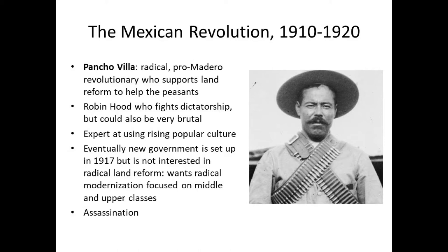This was brilliant by Pancho Villa because it familiarized Americans with him and presented him as someone fighting for liberty and freedom against dictatorship, leading many Americans to support him. That was important because Americans were then able to sell him guns. Villa also made sure he got a cut of all the ticket sales, giving him money to buy weapons. The key point about Pancho Villa is that the Mexican Revolution was many different things — lots of Mexicans were rising up for very different reasons. Villa's primary concern was rural land reform and the interests of the peasants.